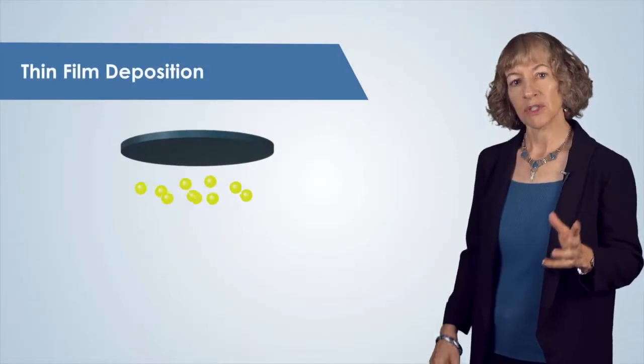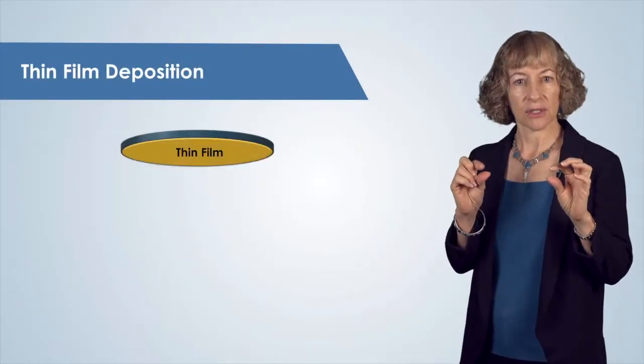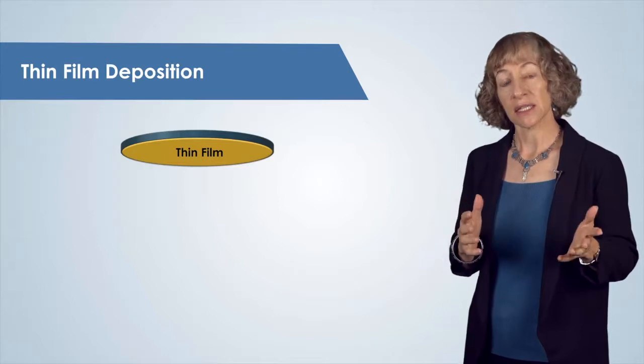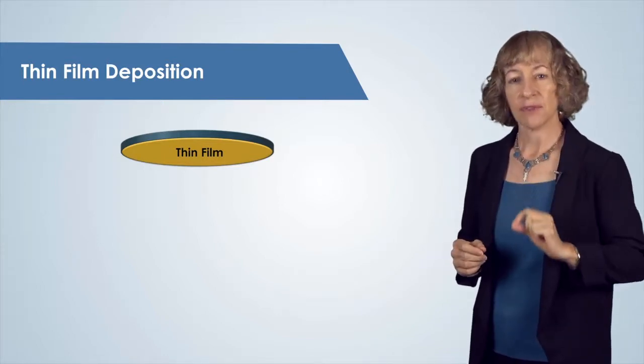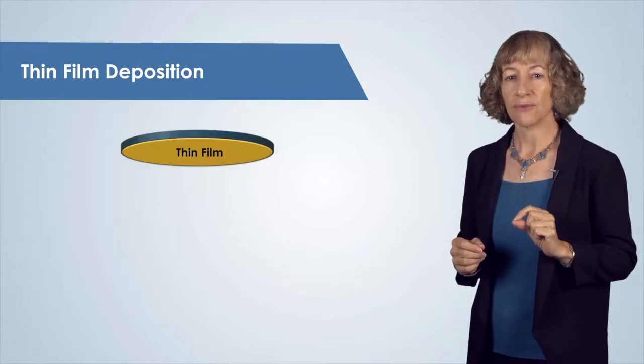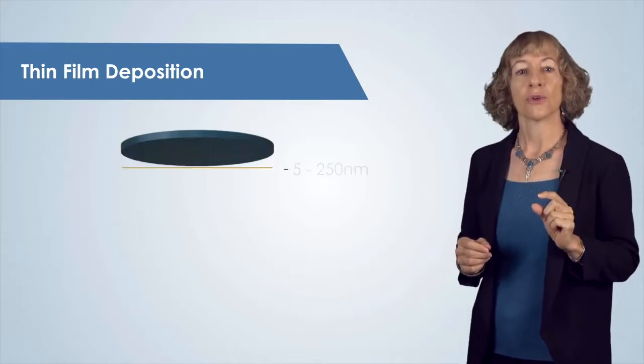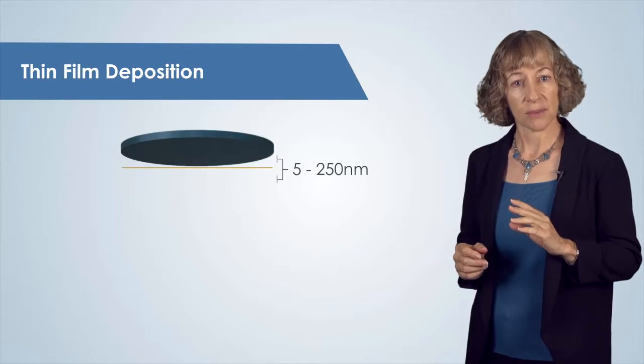We use vacuum systems to deposit thin layers of materials such as metals and insulators onto our substrates. The thicknesses of these vacuum deposited layers are very thin, on the order of 5 nanometers to 250 nanometers.